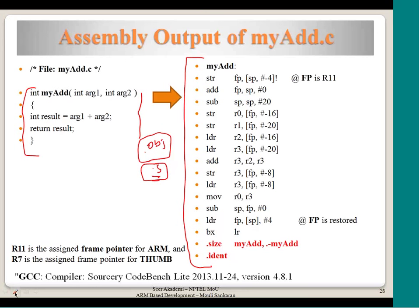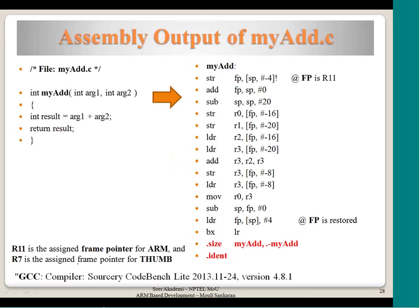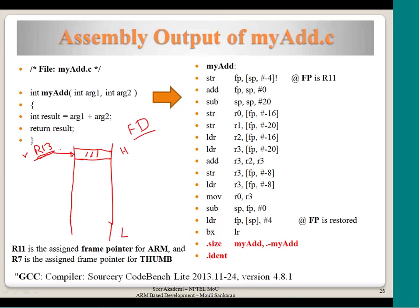Let us understand what is happening here. First, when you get into a function call, how the stack is managed is most important. The stack is always assumed to be fully descending, and R13 is used as the stack pointer. Full descending means it is pointing at something which is already filled with some value. Inside the function, if anything needs to be pushed into the stack, the stack has to be decremented first. R13 is already initialized — we only care about its relative value and how the stack is managed across functions.